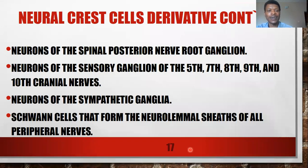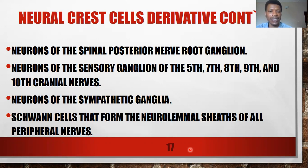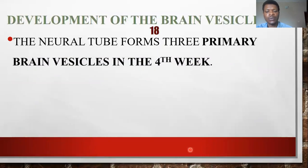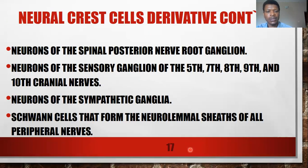Neural crest cells also form sensory ganglia of cranial nerves 5, 7, 8, 9, and 10. The 5th is the trigeminal, 7th is the facial, 8th is the vestibulocochlear, 9th is the glossopharyngeal, and 10th is the vagus nerve. They also form sympathetic ganglia. A correction: Schwann cells are actually for the peripheral nerves, while oligodendrocytes are for the central nervous system.